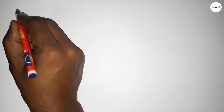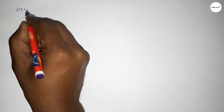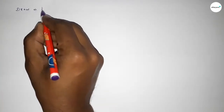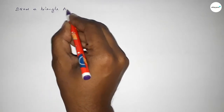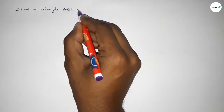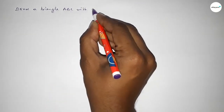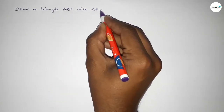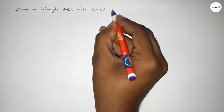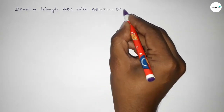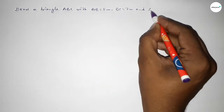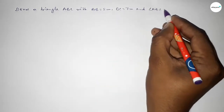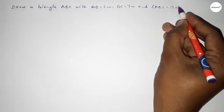Hi everyone, welcome to SI Share Classes. Today in this video we have to draw a triangle ABC with AB equal to 5 centimeters, BC equal to 7 centimeters, and angle ABC equal to 120 degrees. So let's start the video.